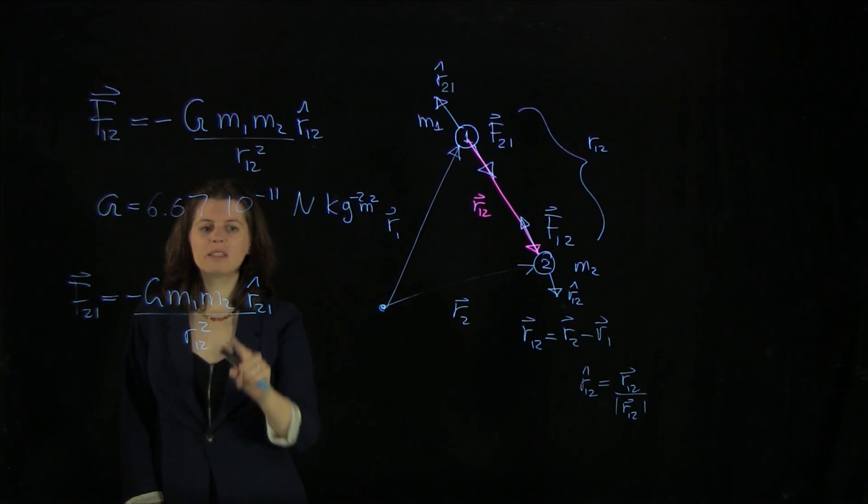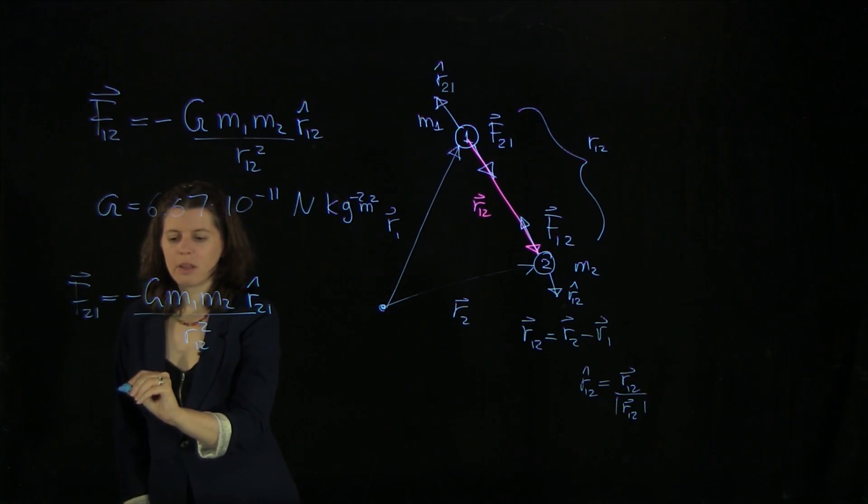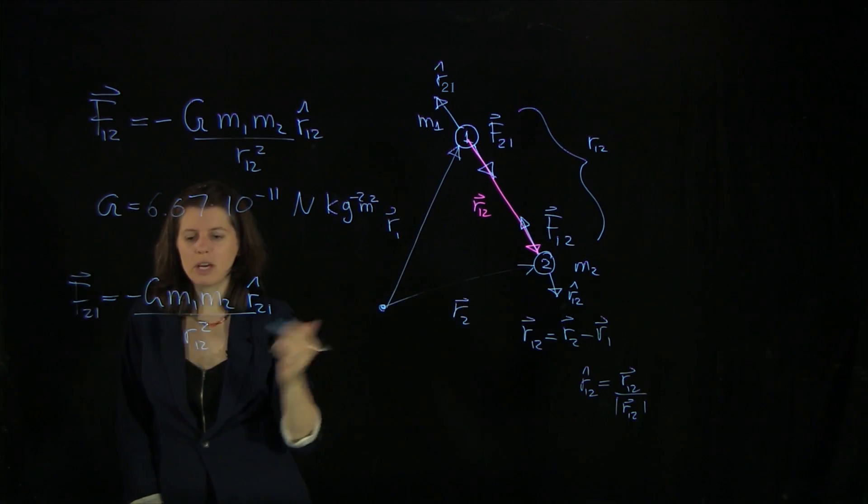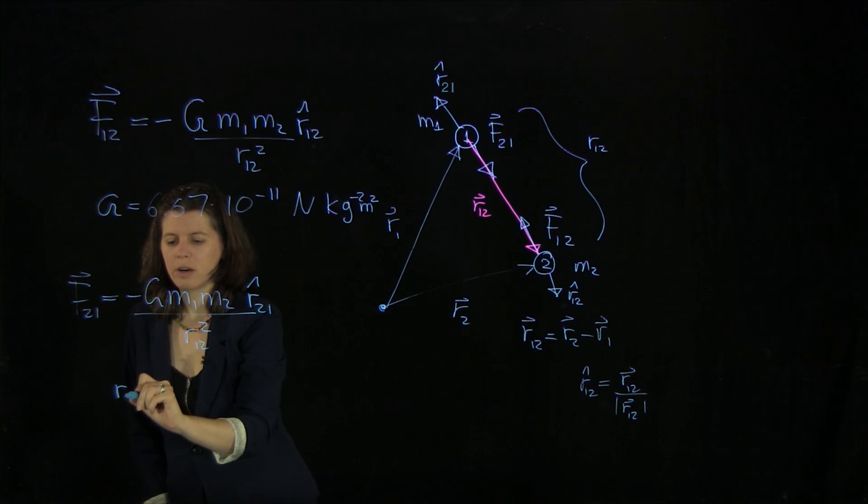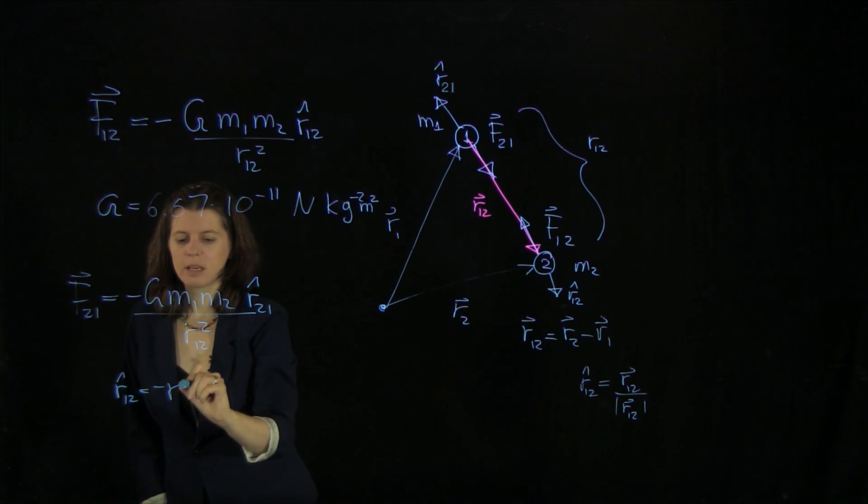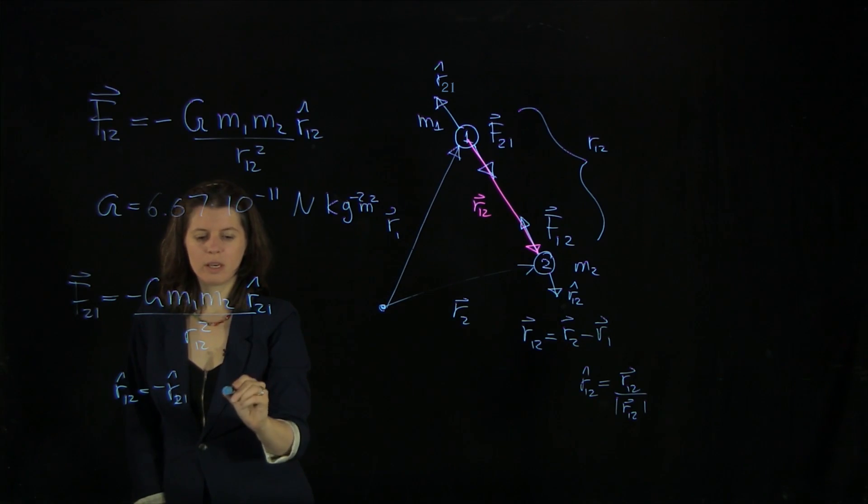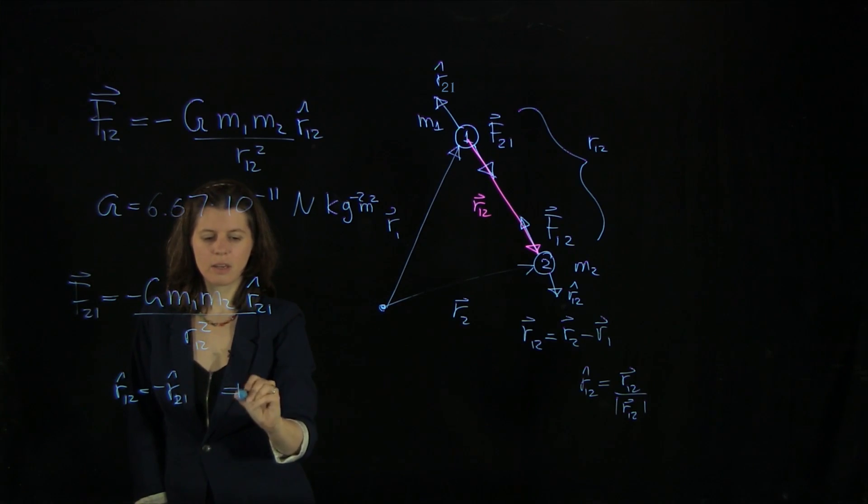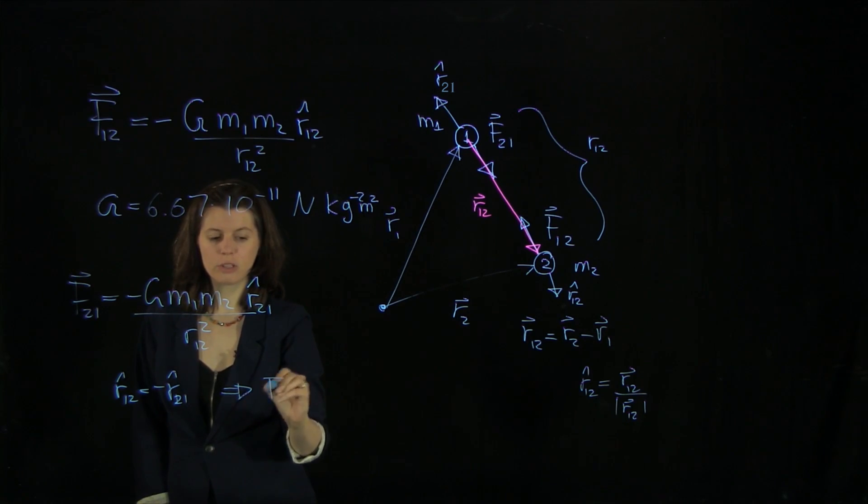So that's all good. But what we see from this one here, and actually from our diagram already, that r12 equals minus r21.